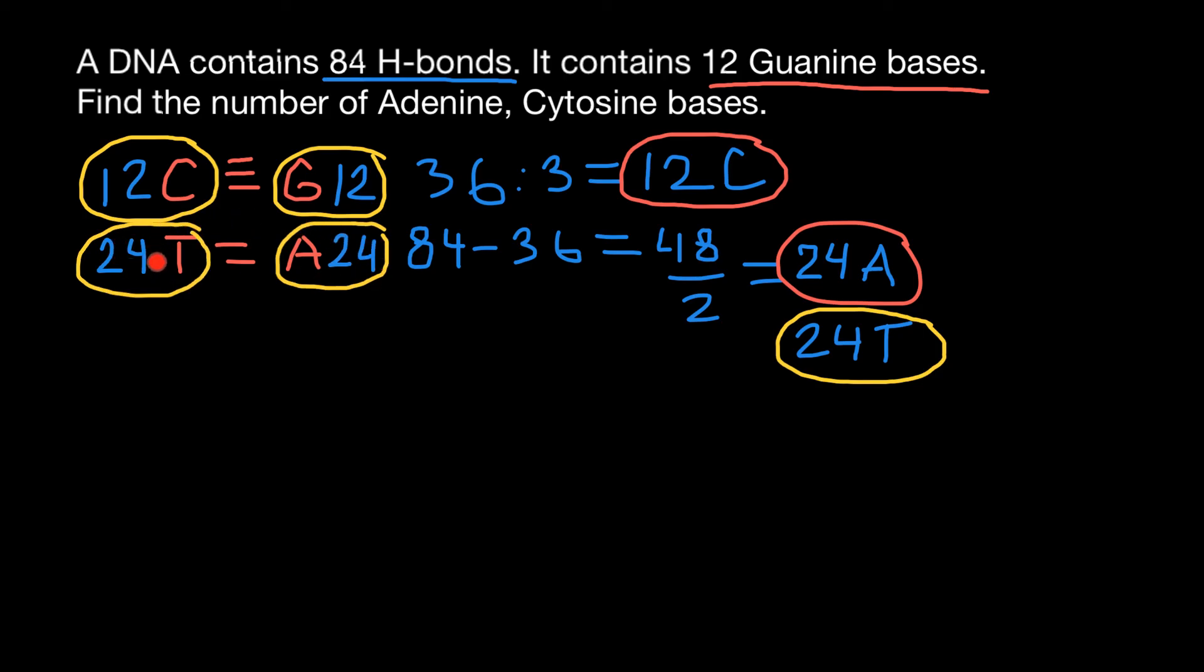And let's check. We have 24 pairs of thymine-adenine with double hydrogen bonds between them, so 48 hydrogen bonds here. And we have 12 cytosine-guanine base pairs with 36 hydrogen bonds between them. So 36 plus 48 gives us 84 hydrogen bonds.